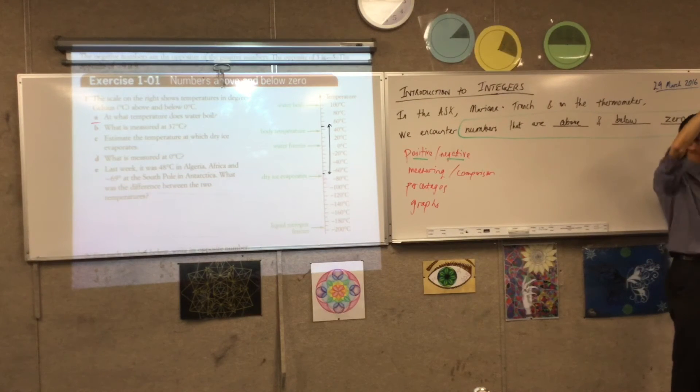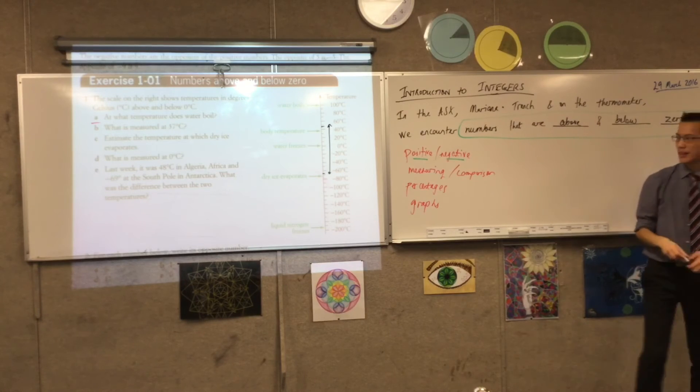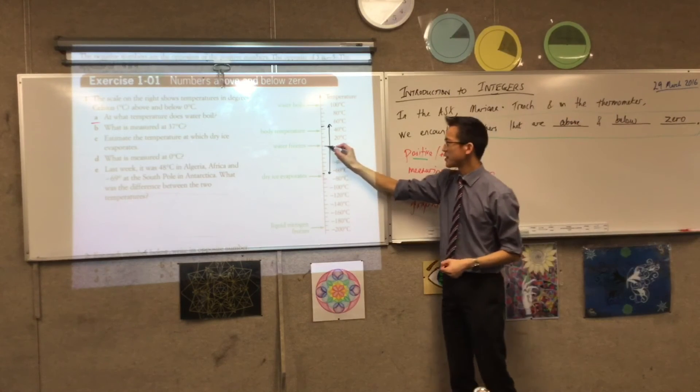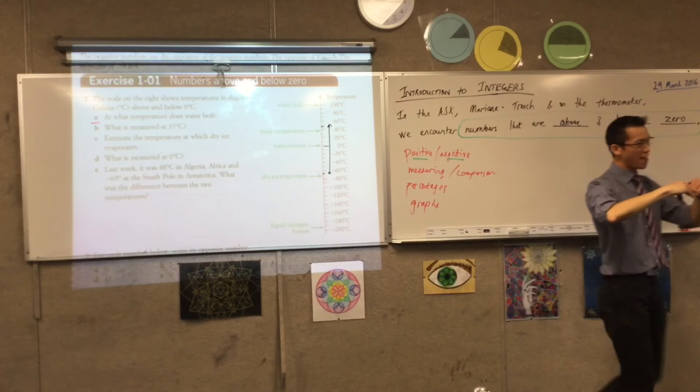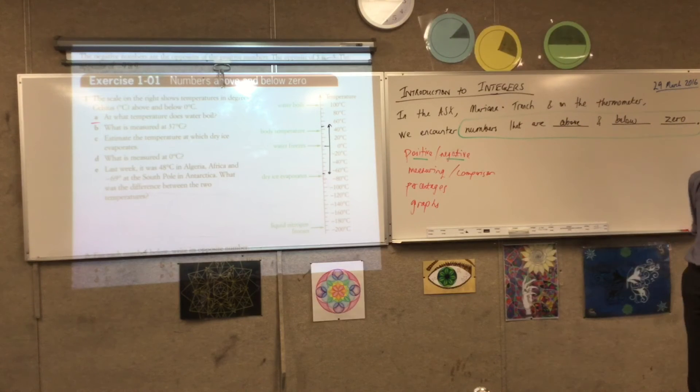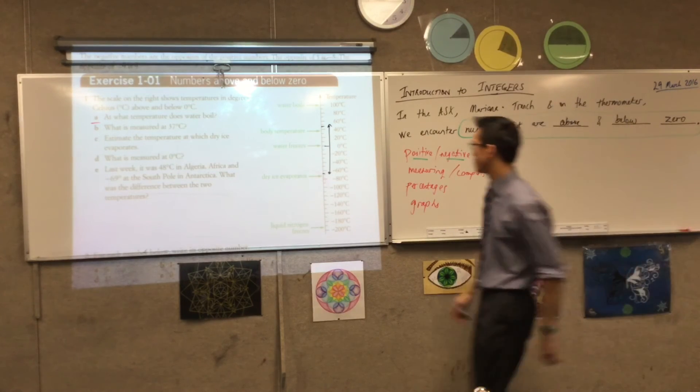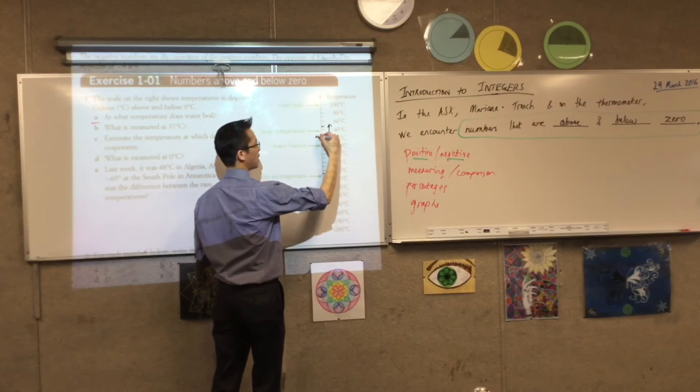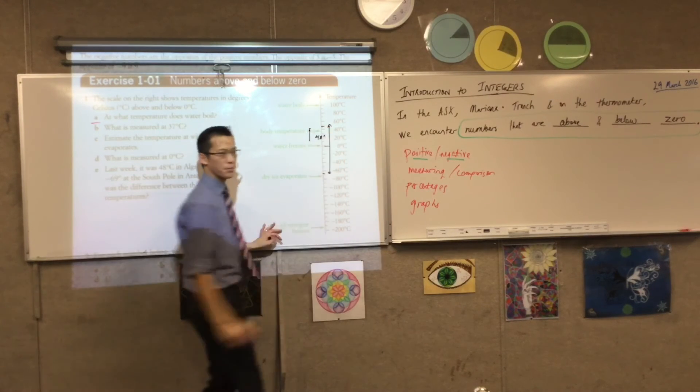Because I'm about to do a bit of work in here, which I want you to have on your page as well. Okay? If I want to work out that whole distance, the whole distance, right? What these numbers signify is that from zero up to that really hot temperature in Algeria, that's 48 degrees. Right? 48 degrees. That's going up. Okay?